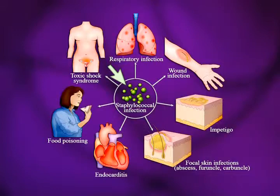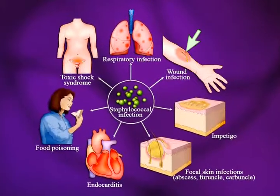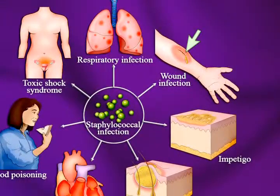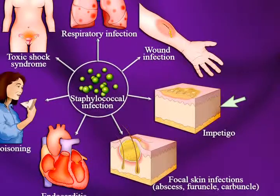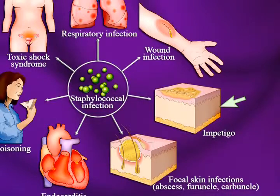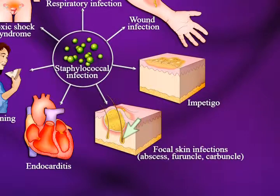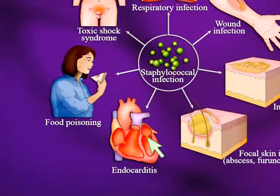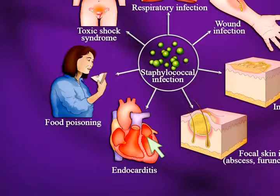The most common staph aureus infections are wound infections — they get moved from the skin where they do no harm into the deeper tissues, either by accident or at a surgical operation where the skin isn't cleaned properly. We also have the only surface infection of staph, which is called impetigo — honey-colored crusts of staph growing, treated very simply with washing and topical antibiotics. Staph can crawl down into hair follicles and make a mini abscess called a furuncle, boil, or carbuncle.